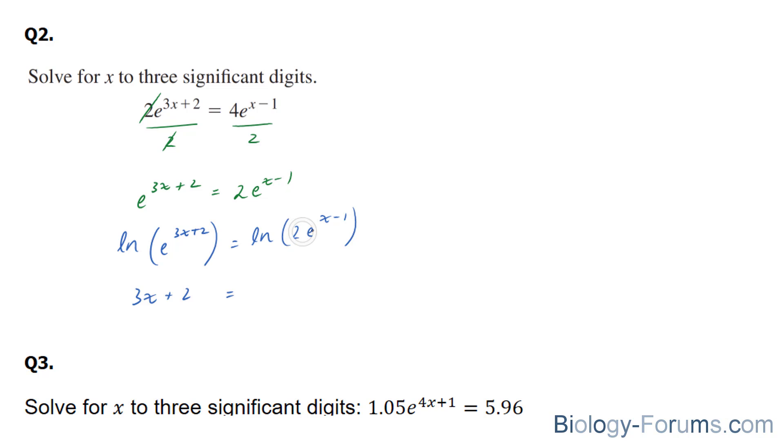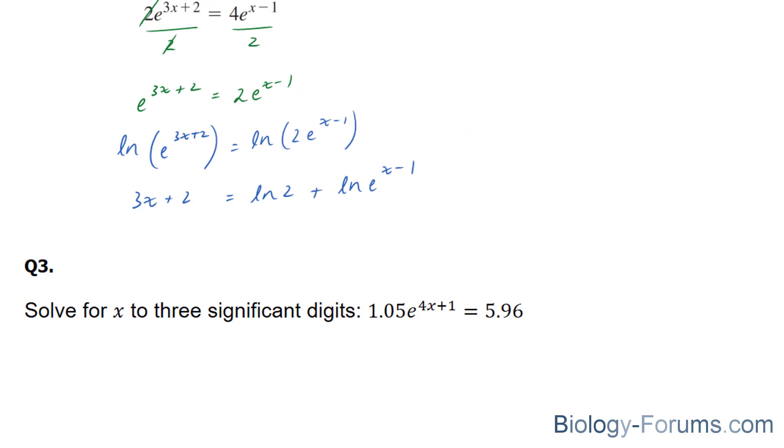And on the right side here, you have 2 being multiplied to e to the power of x minus 1. Therefore, we can distribute this ln to both of these factors: ln 2 plus ln e to the x minus 1. That is one of the properties of logs.